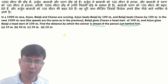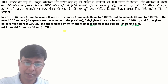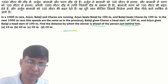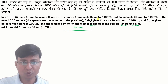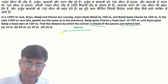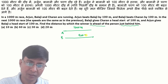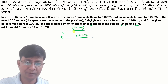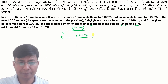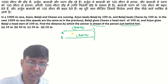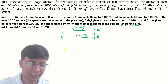First, let's understand the problem properly. If it is a 1000-meter race and Arjun beats Balaji, that means when Arjun travels 1000 meters, Balaji travels how much? 900 meters — so the gap is 100 meters. That implies the distance ratio: simply, if Arjun travels 10, then Balaji travels 9.